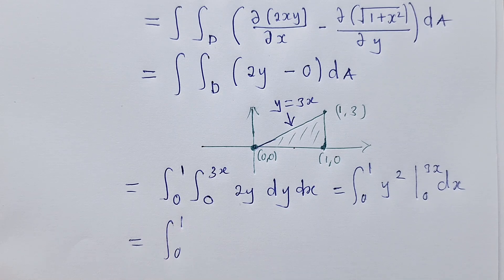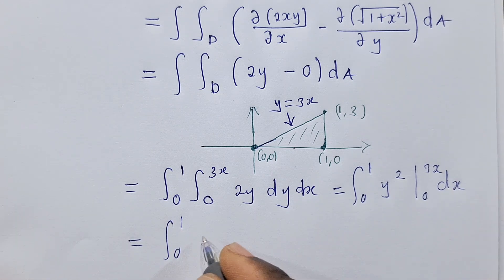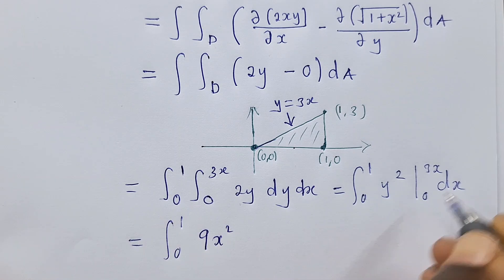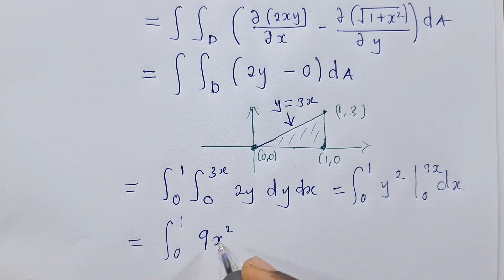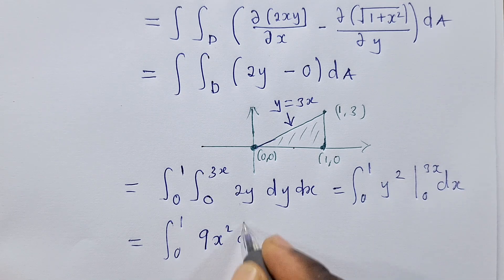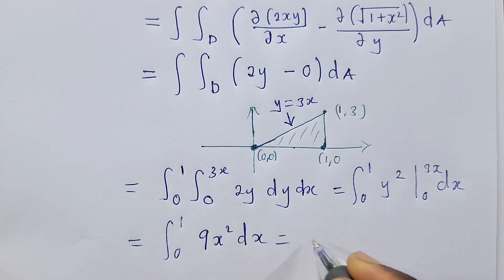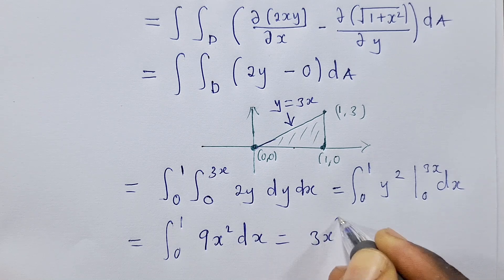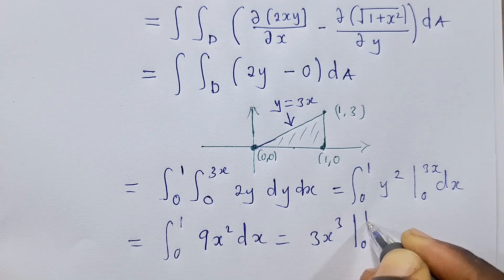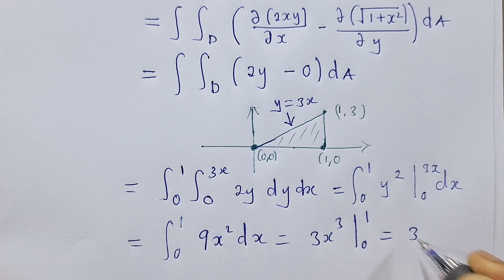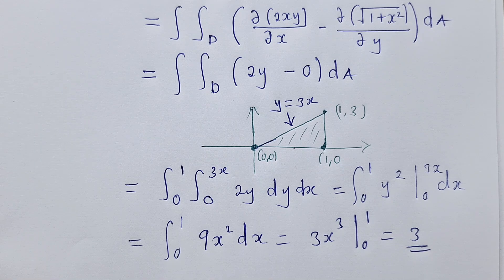From this stage, this will give us 9x squared when we substitute 3x right here, it will be 9x squared dx. Then we finish it up, it will be 3x cubed from 0 to 1. We substitute, it will just be 3, so the answer is 3.